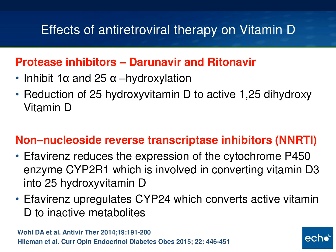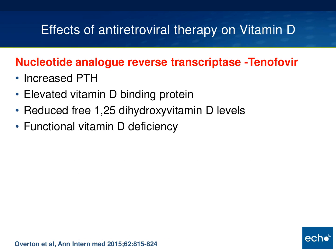The NNRTIs, like efavirenz, reduce the expression of the cytochrome P450 enzyme involved in the conversion of vitamin D3 to 25-hydroxy vitamin D. They also upregulate CYP24, which converts the active vitamin D to inactive metabolites. Both these groups of agents reduce the formation of vitamin D, and human trials have shown a reduction in 25-hydroxy vitamin D with NNRTIs when initiated by as much as 6 to 10 nanograms per ml.